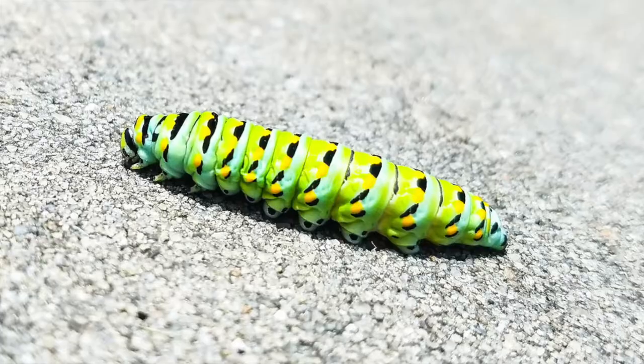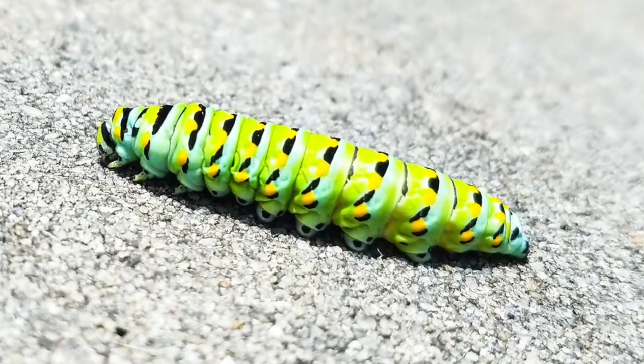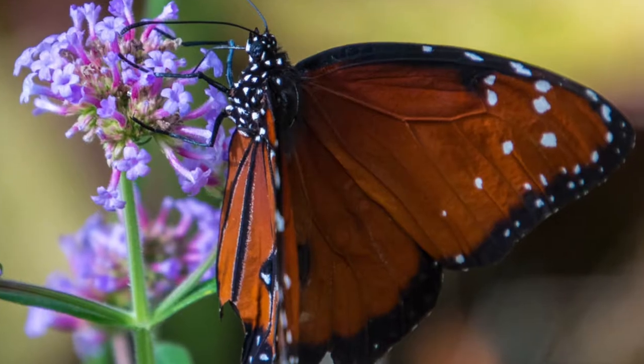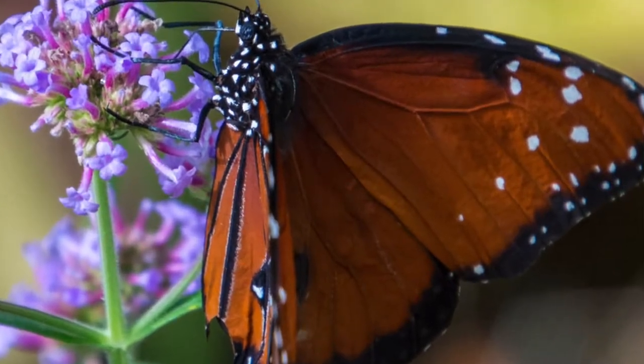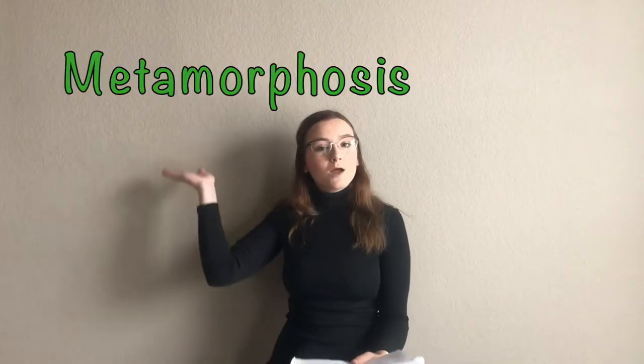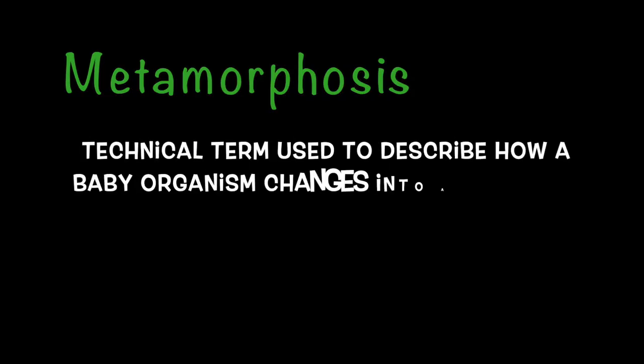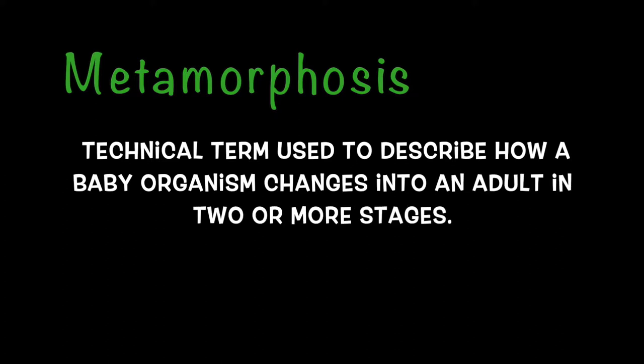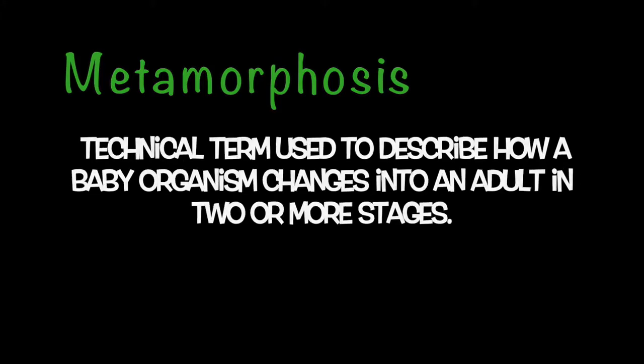Hello class! I hope you're ready to discover the mystery behind how a caterpillar turns into a butterfly. What is it you may ask? Metamorphosis. Metamorphosis is a technical term used to describe how a baby organism turns into an adult in two or more stages.